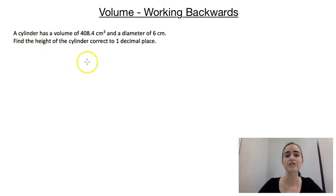Our first question says a cylinder has a volume of 408.4 centimeters cubed and a diameter of 6 centimeters. We want to find the height of the cylinder correct to one decimal place.